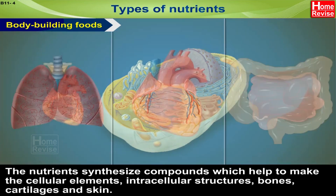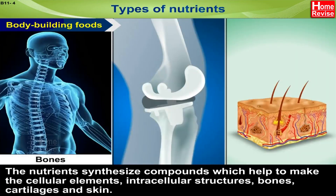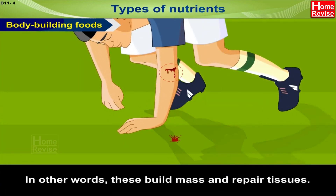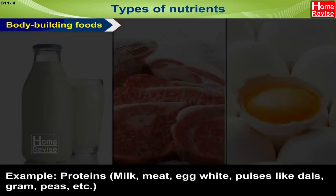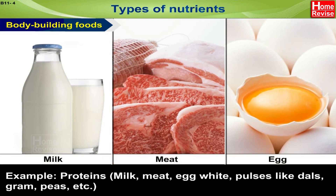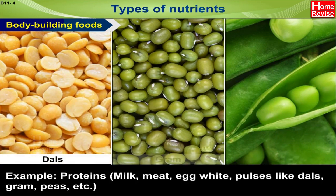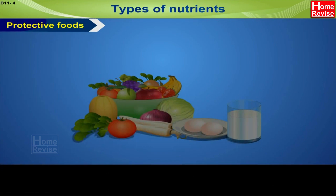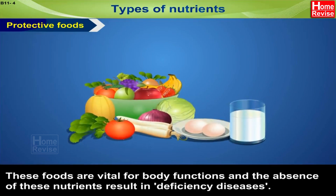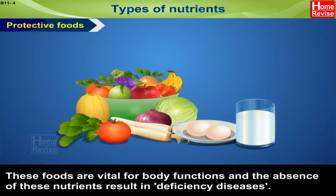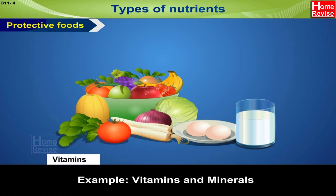Bodybuilding foods: the nutrients in these foods synthesize compounds which help to make cellular elements, intracellular structures, bones, cartilages, and skin. In other words, these build mass and repair tissues. Examples include proteins such as milk, meat, egg white, and pulses like dals, gram, and peas. Protective foods: these foods are vital for body functions, and the absence of these nutrients results in deficiency diseases. Examples are vitamins and minerals.